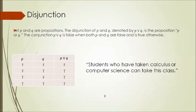For disjunction, using the V symbol, the proposition P OR Q is false only when both P and Q are false, and true otherwise. For example: 'Students who have taken calculus or computer science can take this class.' The truth table shows: false OR false = false; false OR true = true; true OR false = true; true OR true = true.